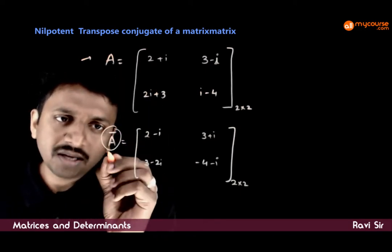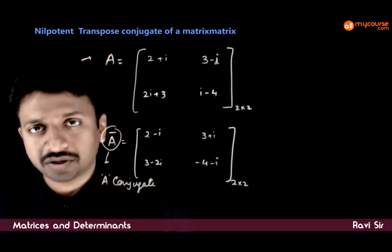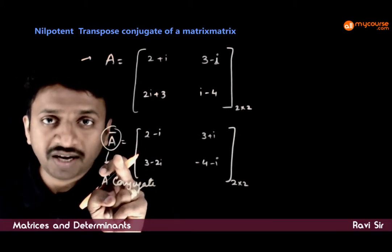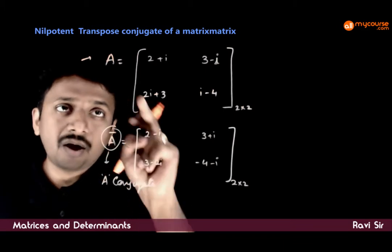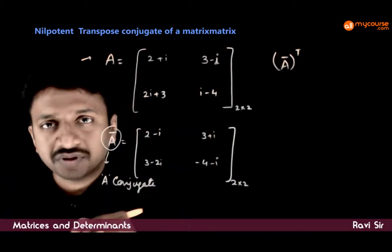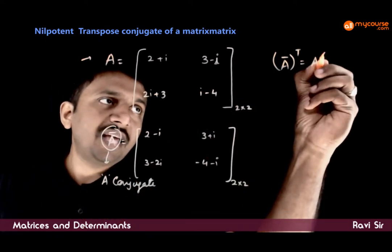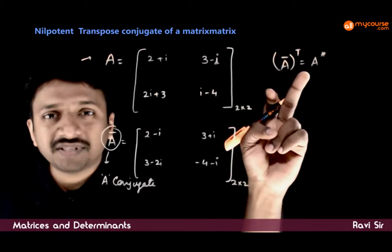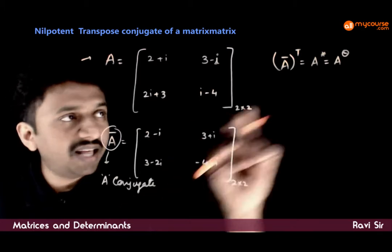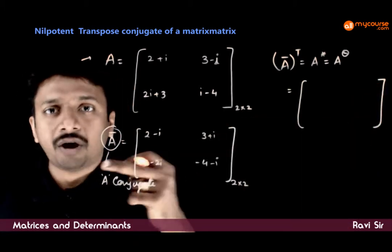This matrix is called A conjugate. Now, the transpose of this matrix — the transpose of the conjugate — is called the transpose conjugate of the original matrix. This is represented by A star, or it can also be represented by A theta. A superscript theta is defined as the transpose of the conjugate matrix.